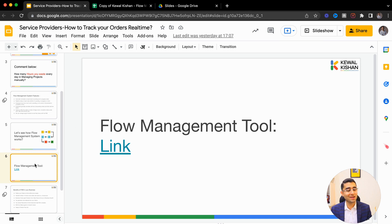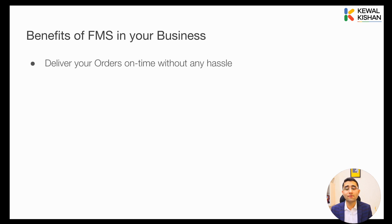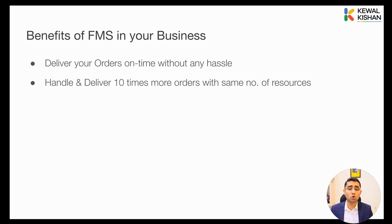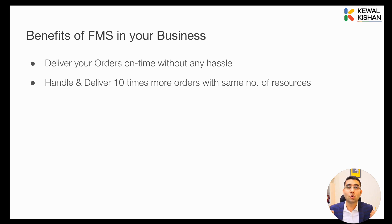This is the system using which you can start managing your projects and orders on time. The benefits of using the Flow Management System with Google and WhatsApp automation: first, you start delivering orders and projects on time without hassle. Second, you get the capability to handle 10 times more projects with the same number of resources. When teammates receive reminders, know what needs to be done step by step, and know their deadlines, they complete tasks on time — and your work gets delivered on time, you collect payments on time, and you gain the capability to take on more orders.